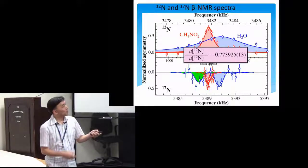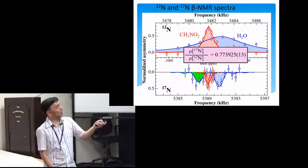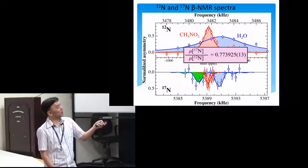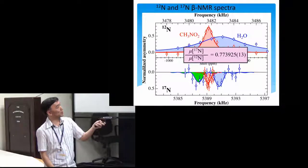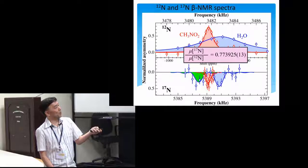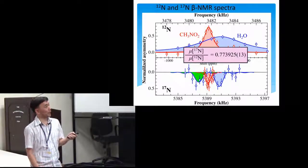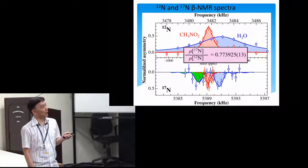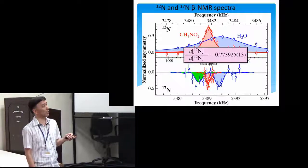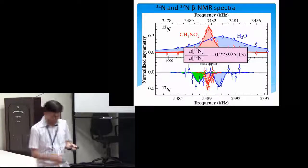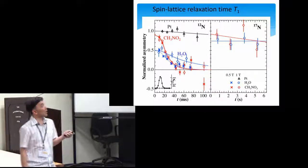From these results, we could obtain the ratio of magnetic dipole moment of nitrogen-17 to nitrogen-12 was determined with the error of about less than 20 ppm, so the order of 10 to the minus 5. So this is the result.